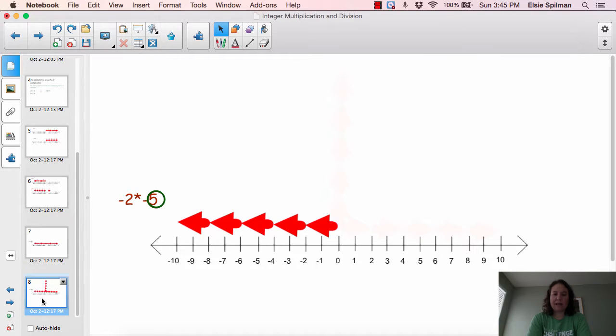And the same thing happens when I do negative 2 times negative 5. So the negative 2 times 5 brought me to negative 10, but when I take into account that extra negative, my distance will flip over the 0 and end up at positive 10. So negative 2 times negative 5 also equals positive 10.